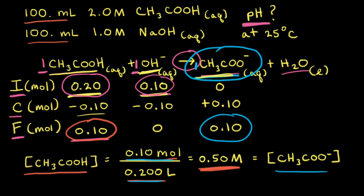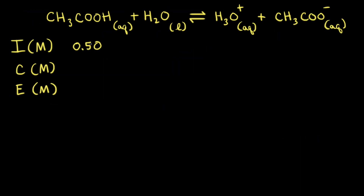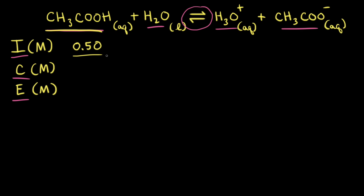Our goal is to calculate the pH, so we need the concentrations of acetic acid and acetate anions. Acetic acid reacts with water to form the hydronium ion, H₃O⁺, and the acetate anion, CH₃COO⁻. This is a weak acid equilibrium problem, so we set up an ICE table. The initial concentration of acetic acid is 0.50 molar. If the acetic acid hasn't ionized yet, the initial concentration of hydronium ions is 0. However, there is already 0.50 molar of acetate anions in solution from the neutralization reaction, so we write 0.50 for the acetate anion in the ICE table.